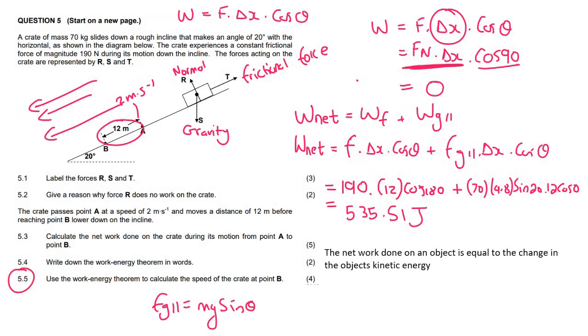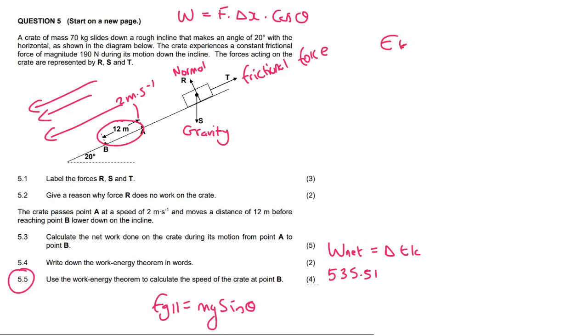Then 5.5 says use the work energy theorem to calculate the speed of the crate at point B. So we know that the work energy theorem is W net equals to change in EK. And that's what it says. The net work done is equal to the change in the object's kinetic energy. And so that's the formula that we'll use for 5.5. Now we already know W net from the previous question. We know that that is 535.51. Kinetic energy, the formula for kinetic energy is a half mv squared. So that's going to be a half mv final squared minus a half mv initial squared.